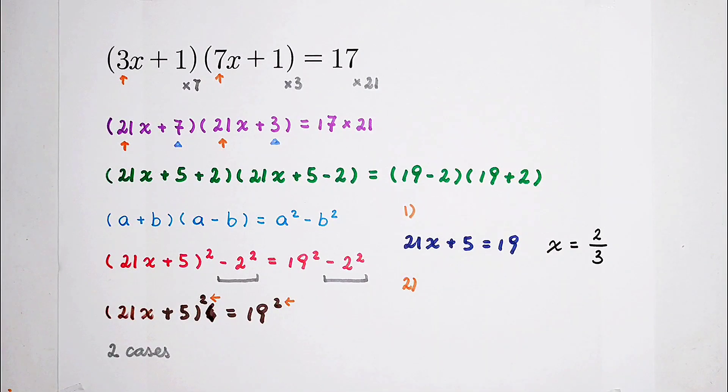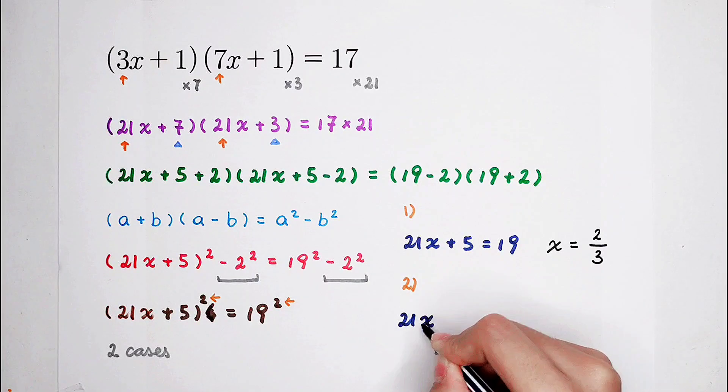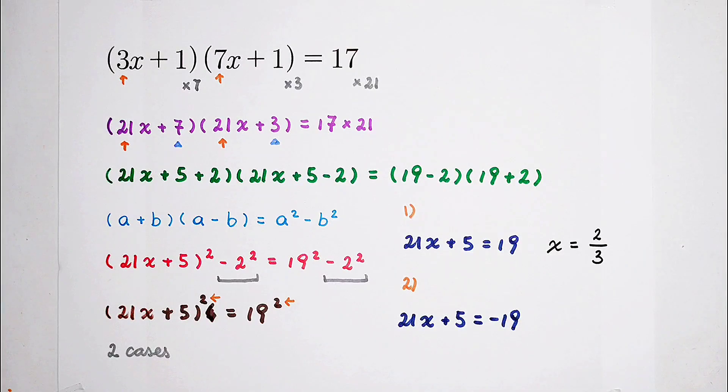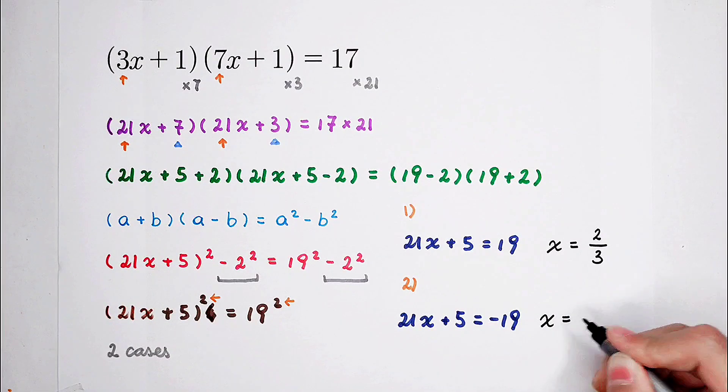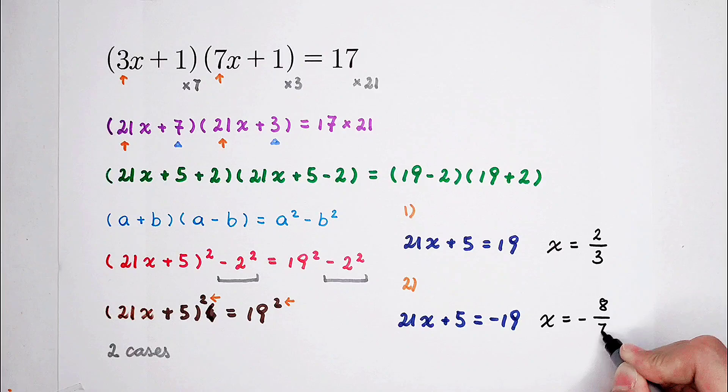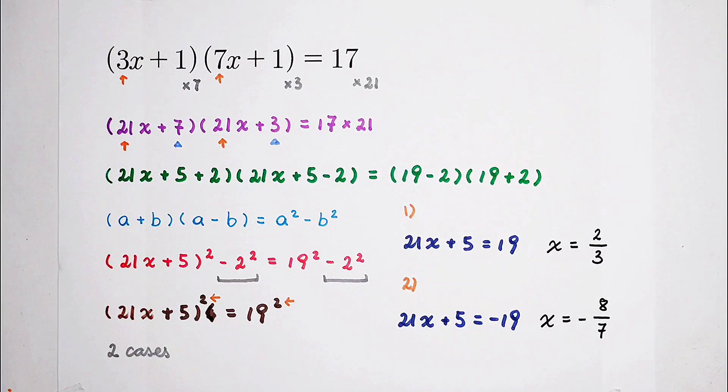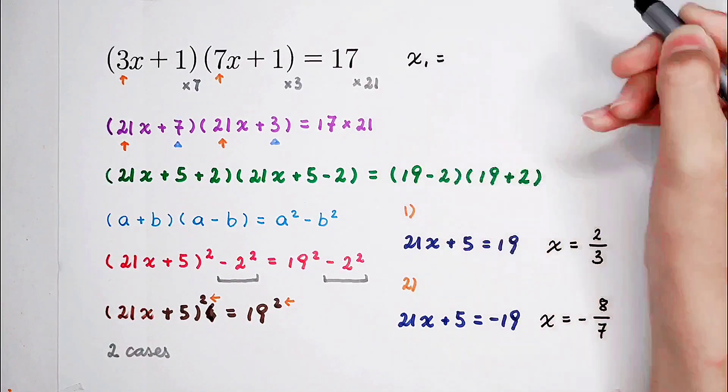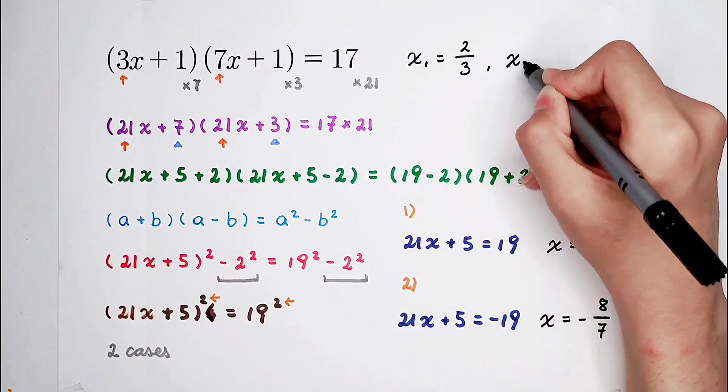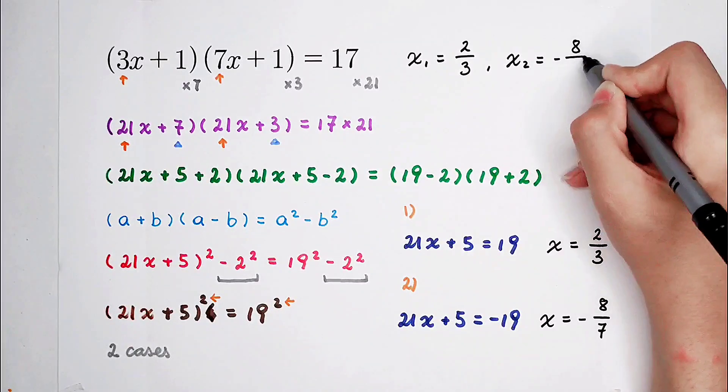For our second case, 21x plus 5 is negative 19. Then x is, of course, negative. Negative 19 minus 5 is negative 24. Then negative 24 over 21 is going to be negative 8 over 7. 2 answers, x1, x2. x1 is equal to 2 thirds, x2 is negative 8 sevenths.